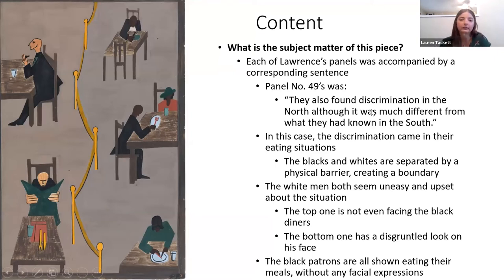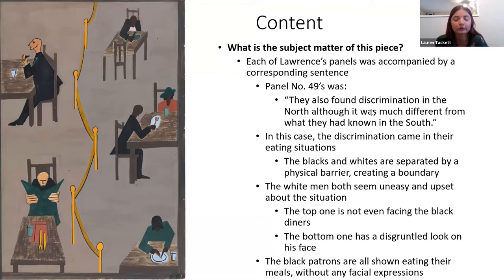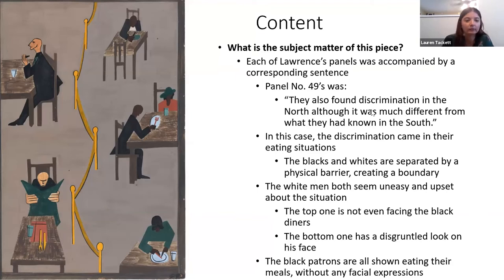For content, each panel in the hundred-panel series had an accompanying sentence. This panel's sentence was: 'They also found discrimination in the North, although it was much different from what they had known in the South.' The discrimination in this piece came in where they were able to eat and their ability to be seated around people of different races.